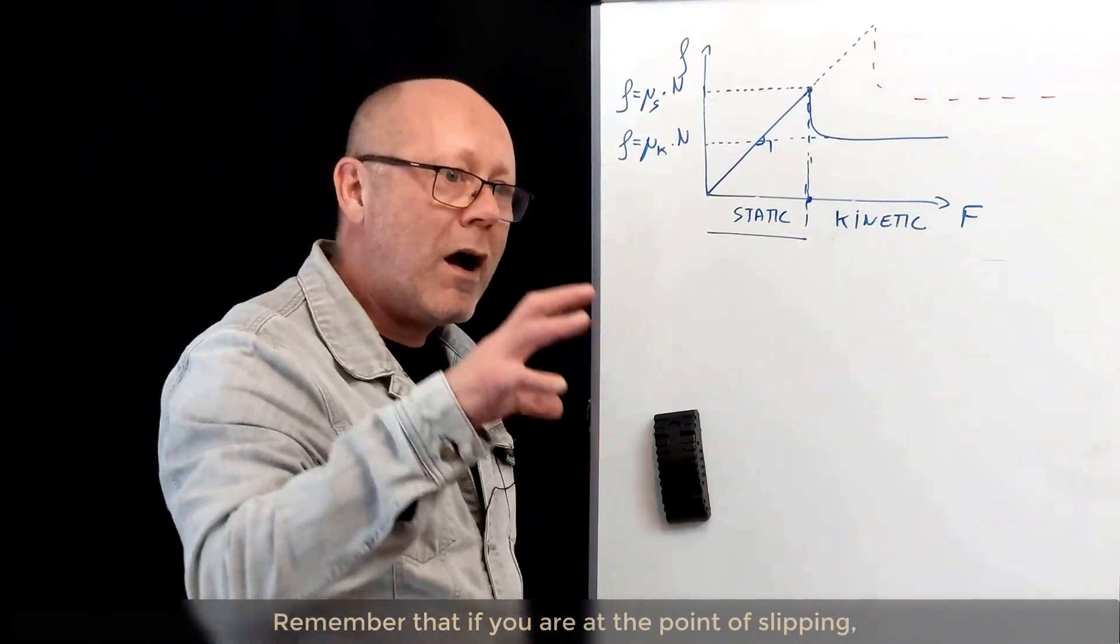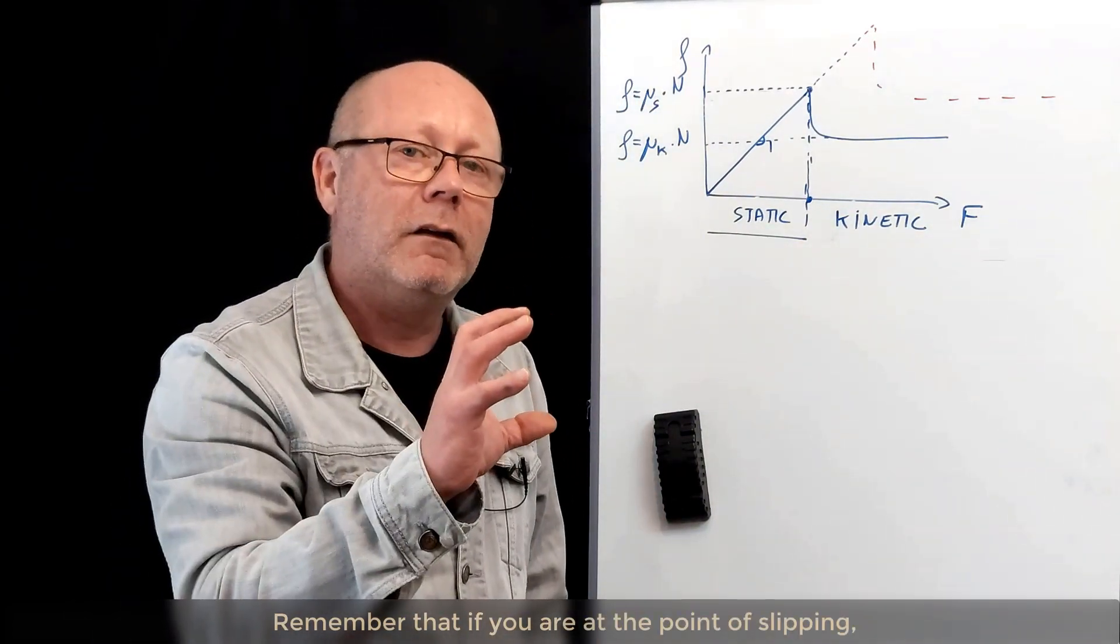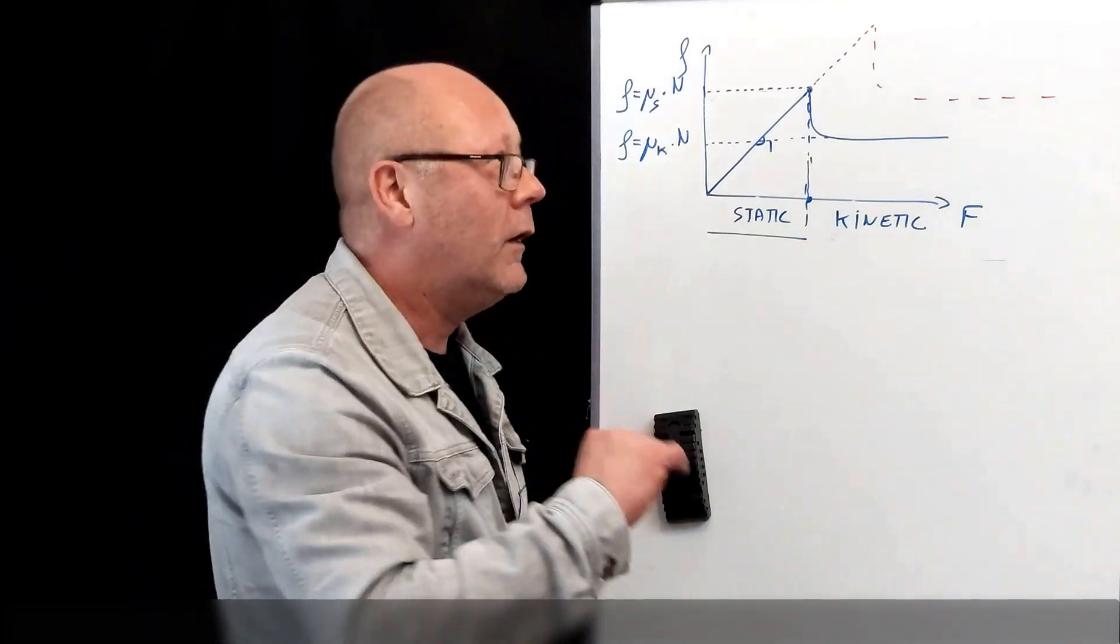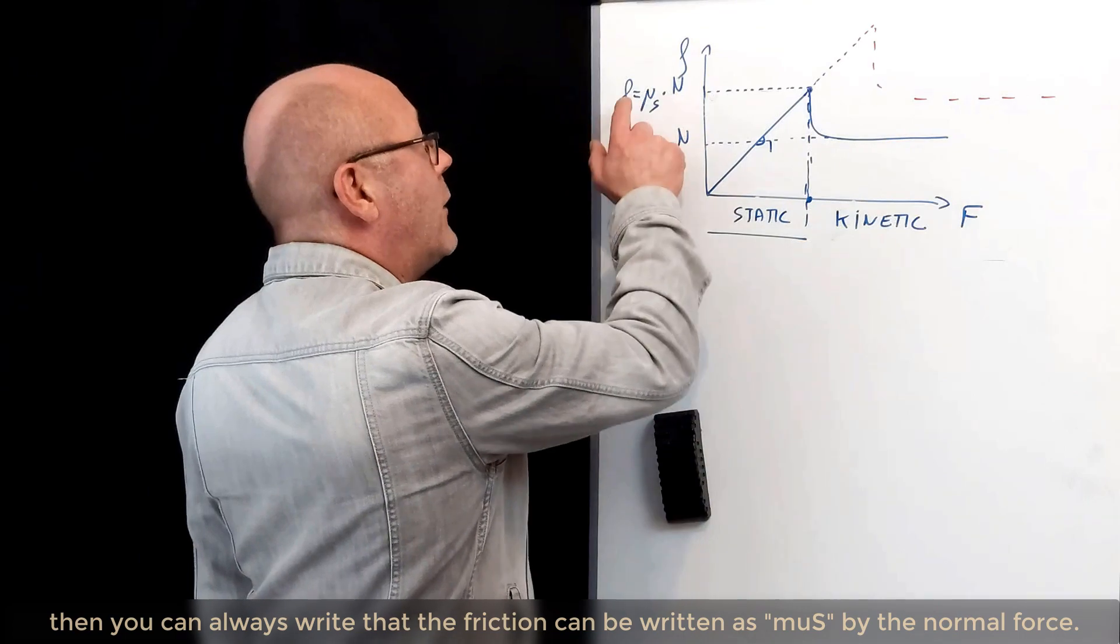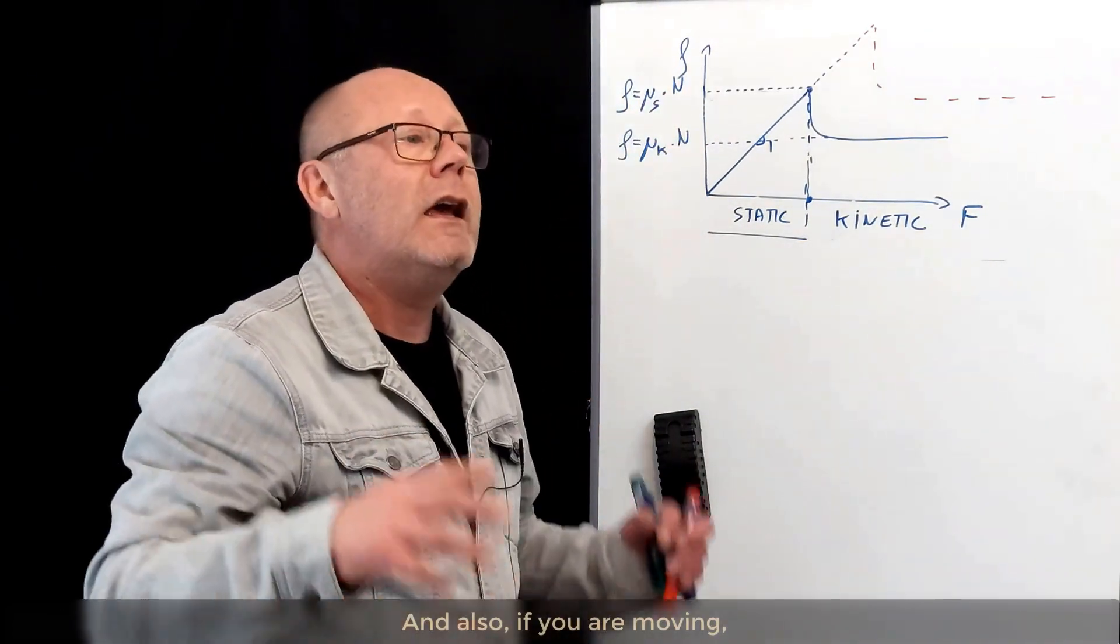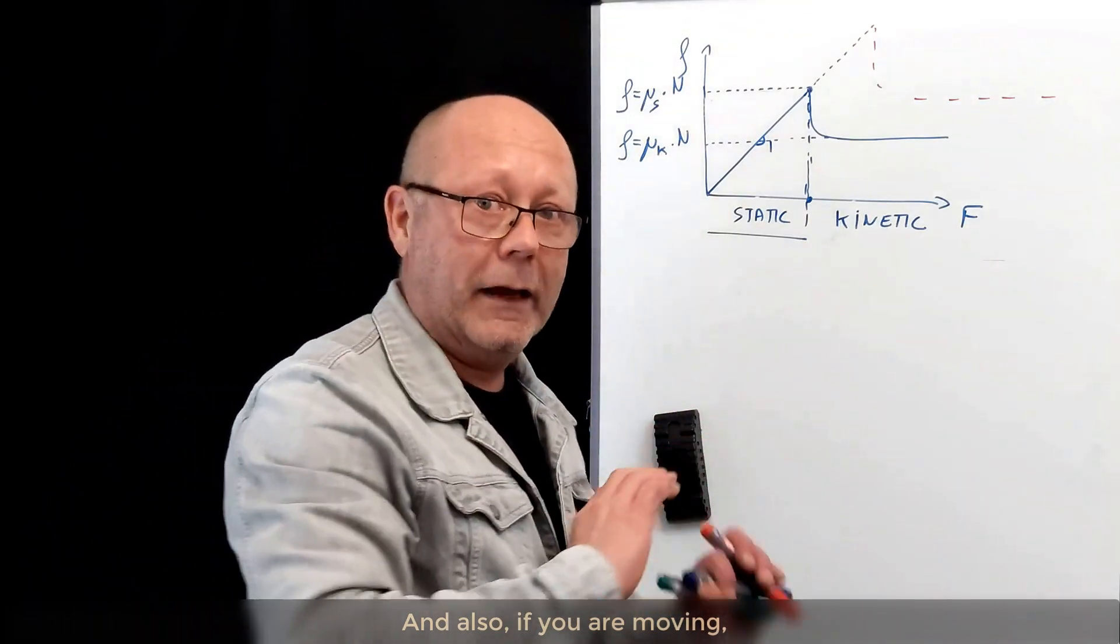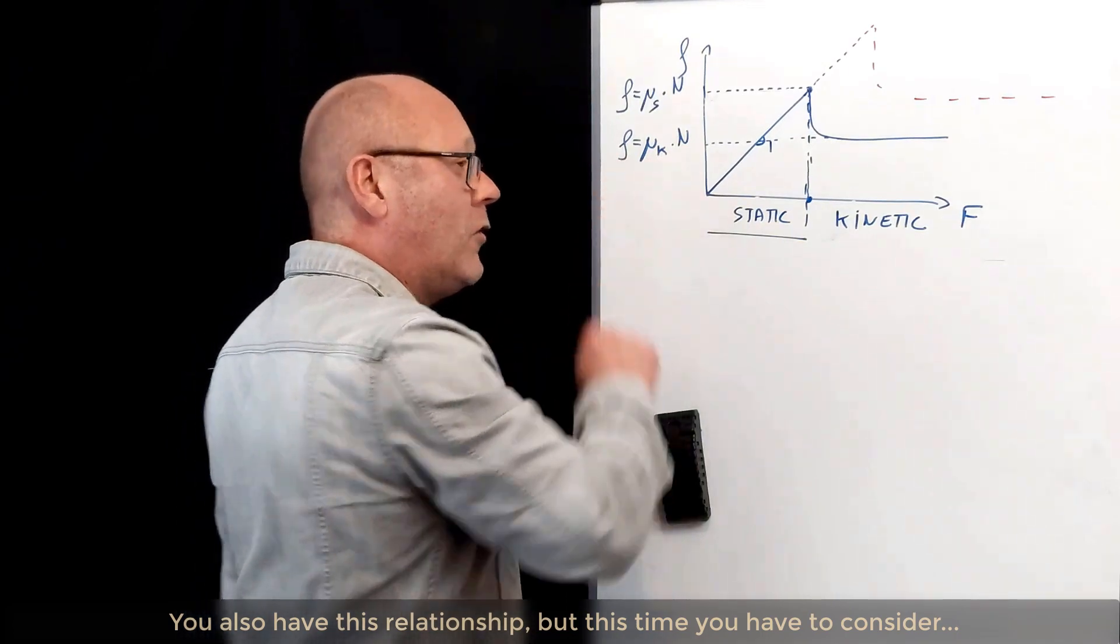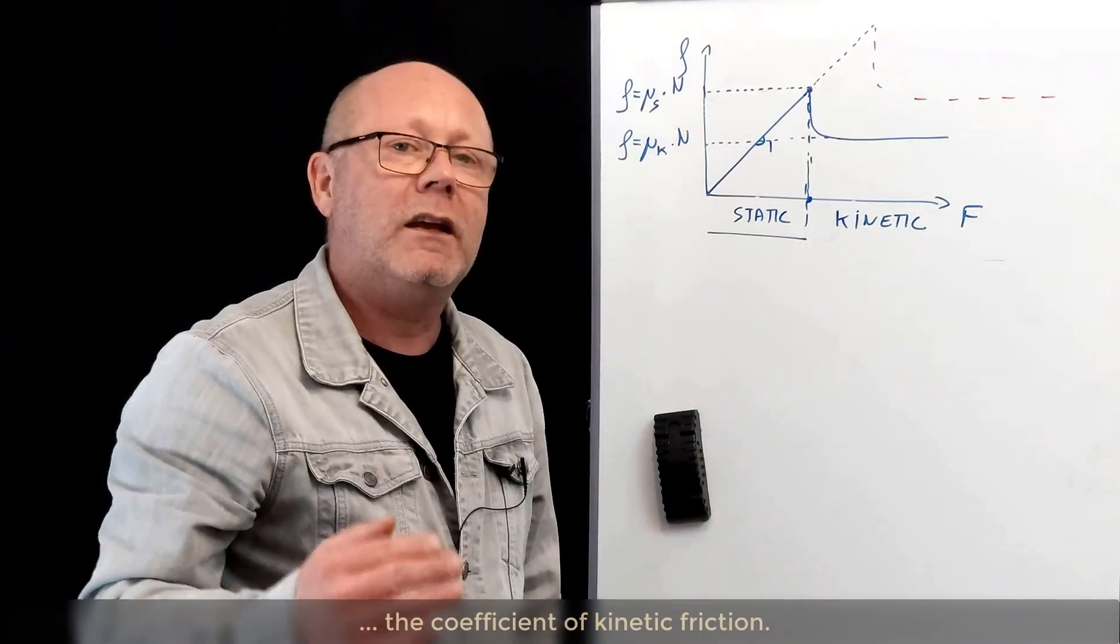Remember that if you are at the point of slipping, meaning that you are about to start to move, then you can always write down that the friction is equal to mu s by the normal force. And also, if you are moving, you also have this relationship, but this time you have to consider the coefficient of kinetic friction.